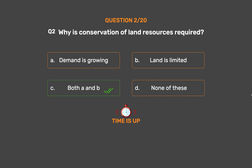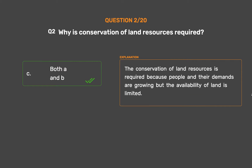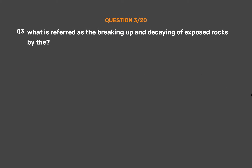The correct answer is Option A. The conservation of land resources is required because people and their demands are growing but the availability of land is limited.